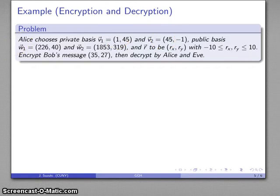She then computes two badly orthogonal vectors, very near parallel vectors, W1 and W2, as the public basis. And she identifies that a noise vector can have components between negative 10 and positive 10.